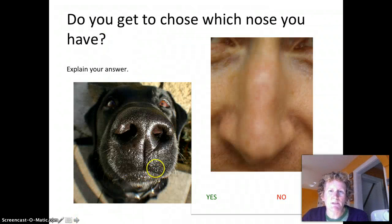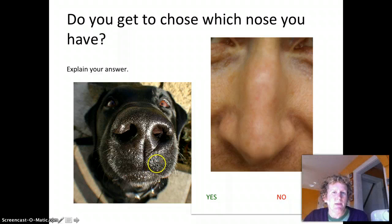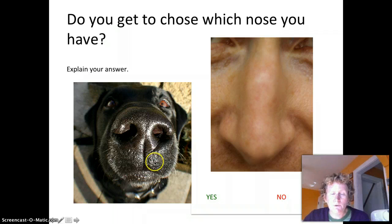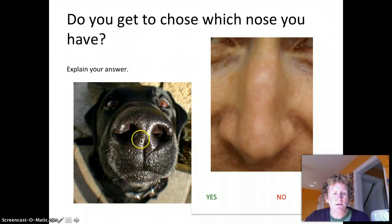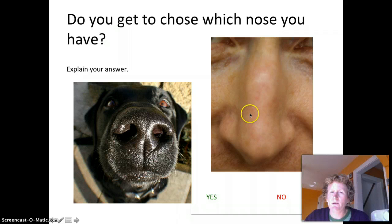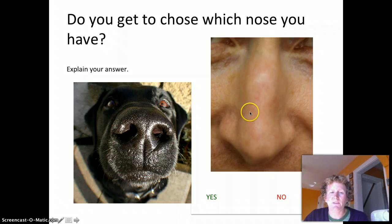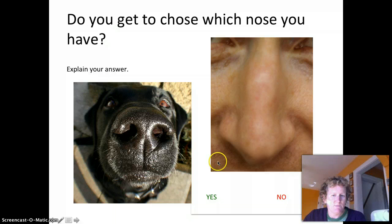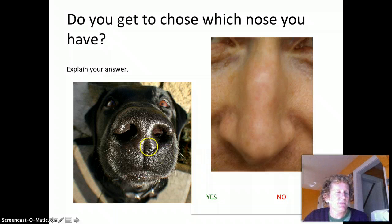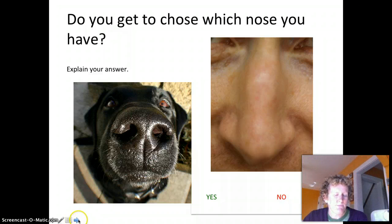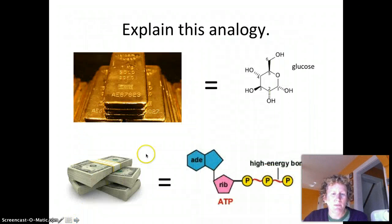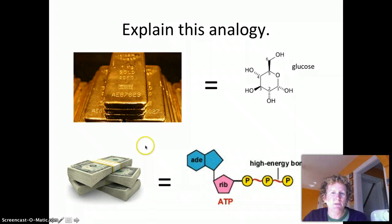An essay question asks whether animals get to choose what structure they want. Do you get to choose what nose you have — do you have a dog's nose or a person's nose? You know what nose you have and you can't get a different one. The dog can't suddenly decide to have a person's nose. This relates to the idea that structure is determined, not chosen.